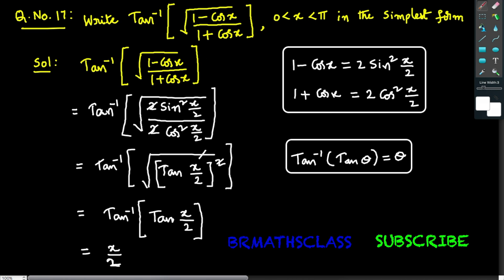Write tan inverse of square root of (1 minus cos x) divided by (1 plus cos x) in the simplest form.